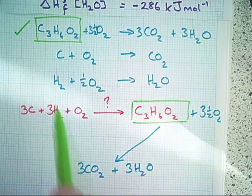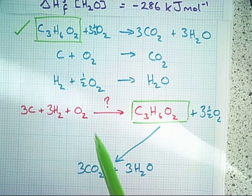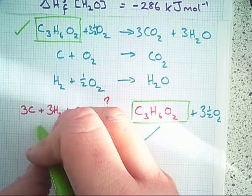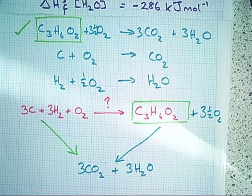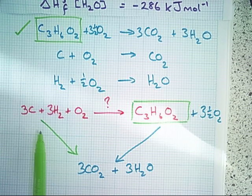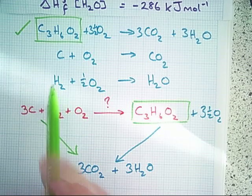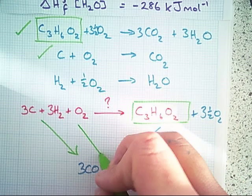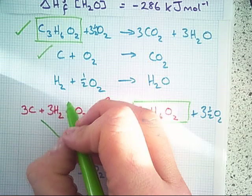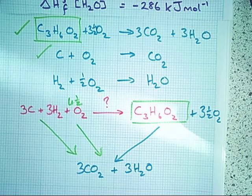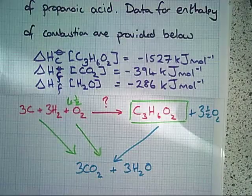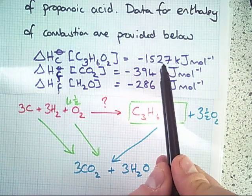Having dealt with that equation, we now need to look at the remaining two equations and see where they fit into our Hess cycle. Carbon and oxygen is replicated here, and that arrow could represent the enthalpy change of formation of carbon dioxide — the only difference being this is three times the enthalpy change of formation value. Similarly, hydrogen and oxygen reacting to make water vapor fits in as well. Going back to balance the equation, we actually need four and a half O2 molecules.